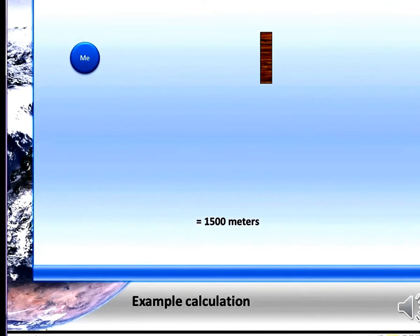So here's an example calculation. I'm pretending to be the blue dot, and then there's that board, or whatever it is, something that's going to reflect the sound. I emit a noise, it travels to the board, it reflects back, and then I hear it.